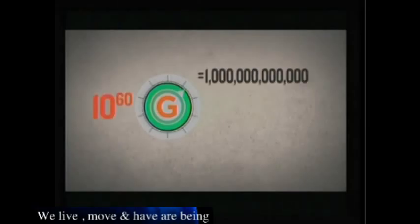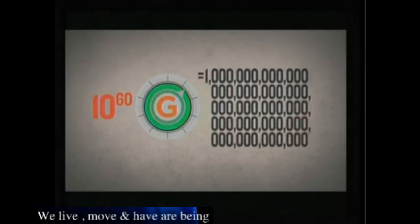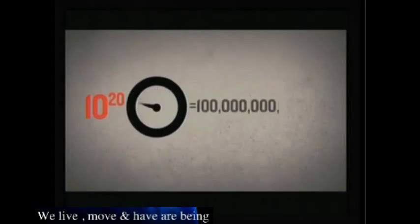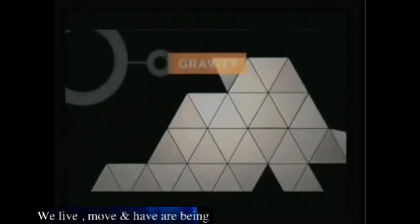To understand how exceedingly narrow this life-permitting range is, imagine a dial divided into 10 to the 60th increments — more points than the number of cells in your body or the number of seconds since time began. If the gravitational constant had been out of tune by just one of these infinitesimally small increments, the universe would either have expanded and thinned out so rapidly that no stars could form, or collapsed back on itself — with the same result: no stars, no planets, and no life.